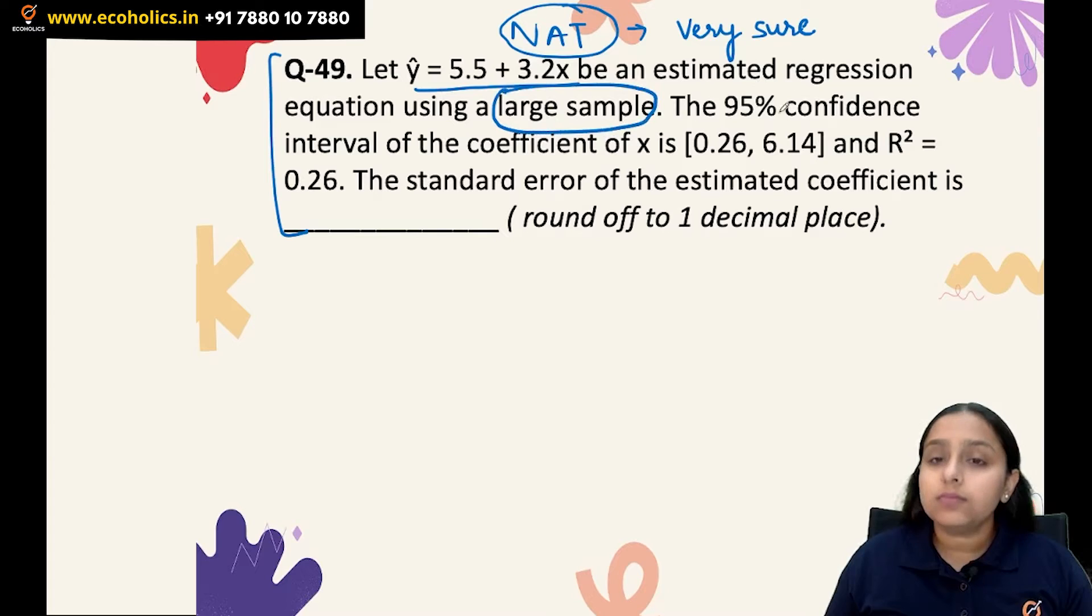It gives you an estimated regression equation, and the important thing here is large sample. It says the 95% confidence interval, the lower limit and upper limit are given here, and the value of R² is also given.